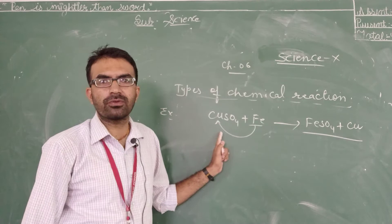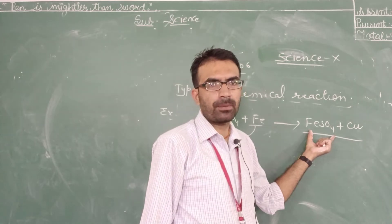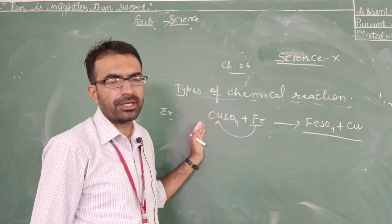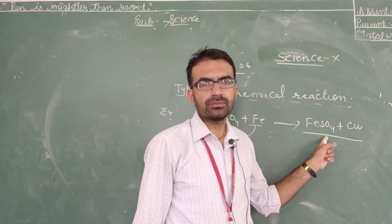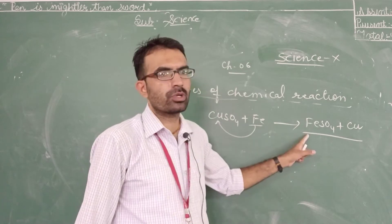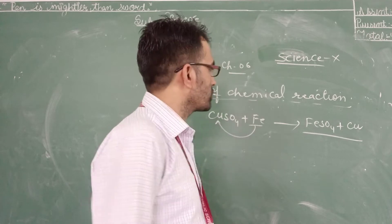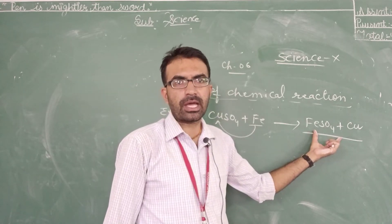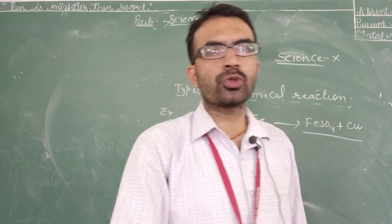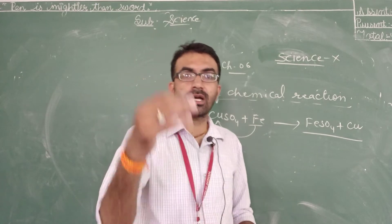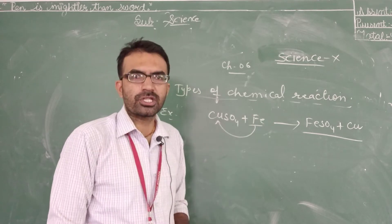Fe is more reactive than Cu, so it will replace Cu and the compound formed will be FeSO4. You can see that the color of CuSO4 is blue, and after the reaction the color will change — it becomes brownish. So this is an example of a displacement reaction.